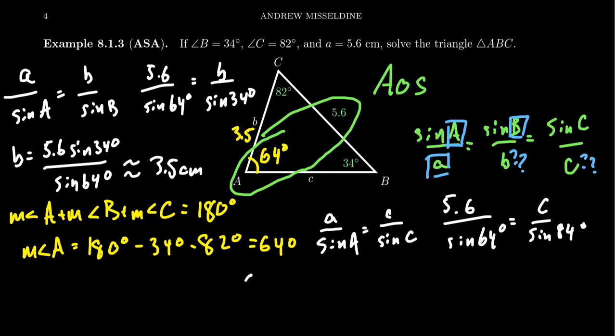This tells us that little c is equal to, if we cross multiply, then divide by the sine of 64 there, we're going to get c is equal to 5.6 sine of 82 degrees over sine of 64 degrees. That's the exact answer.